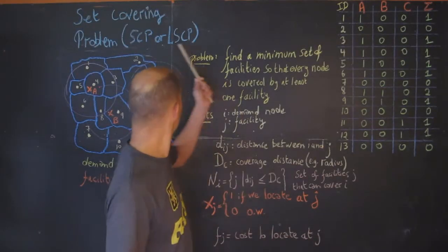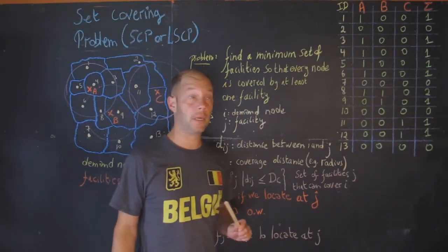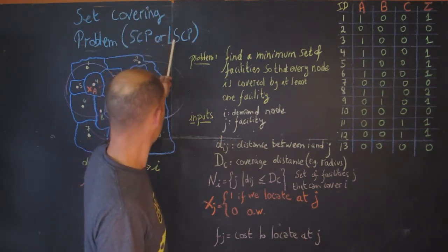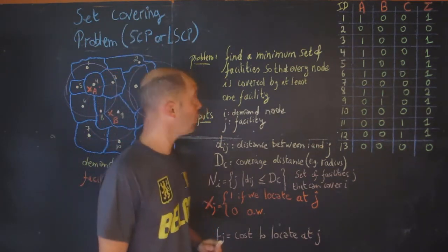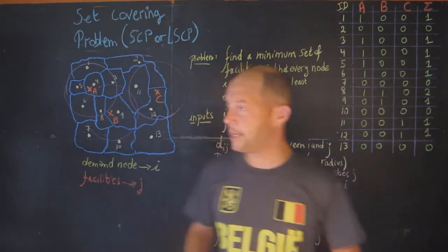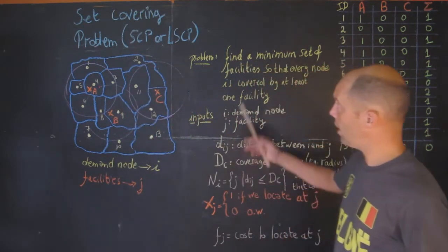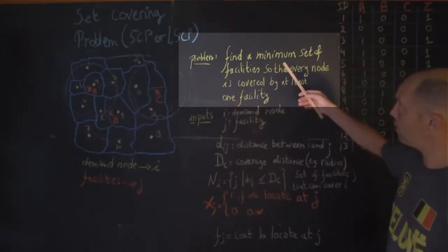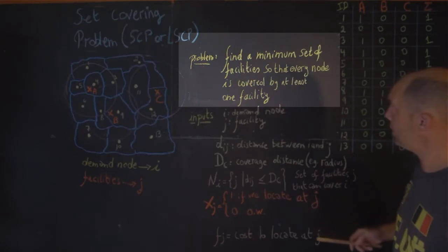Today I'm going to talk about the set covering problem, also known as SCP or LSCP for location set covering problem. This is one of the many covering problems. I'd like to first define what the problem is about. Our objective is to find a minimum set of facilities to minimize the number of facilities in a way that every demand node is covered.